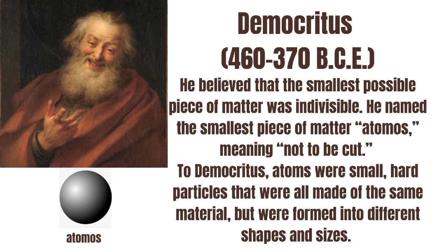Democritus, 460 to 370 BCE, was a Greek philosopher who began the search for a description of matter. He questioned whether matter could be divided into smaller and smaller pieces forever, until eventually the smallest possible piece would be obtained. He believed that the smallest possible piece of matter was indivisible. He named the smallest piece of matter 'atomos,' meaning 'not to be cut.'